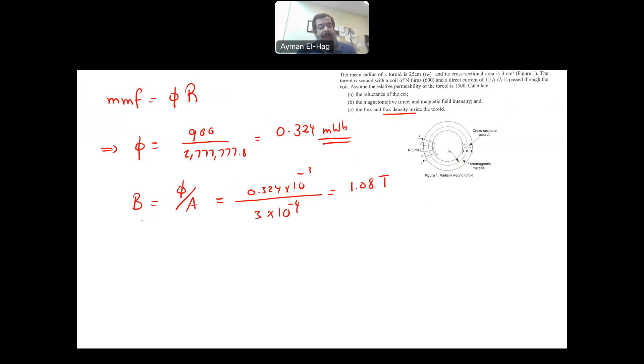There is another way to find B, because B over H is equal to mu, which is mu zero times mu R. This is in the linear region. Now, we have something we'll talk about later on in details. The B-H curve. This is your B and this is your H.